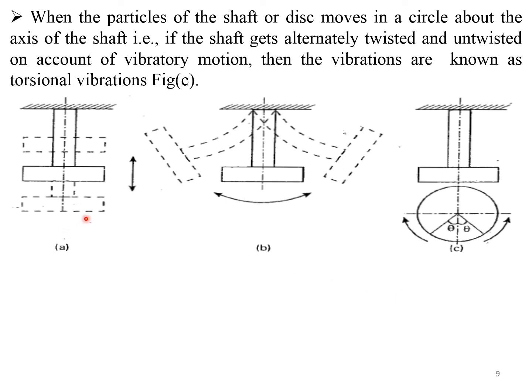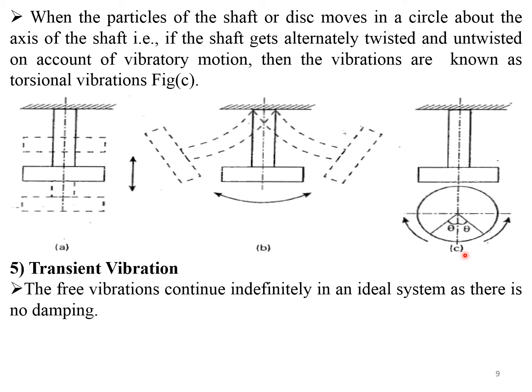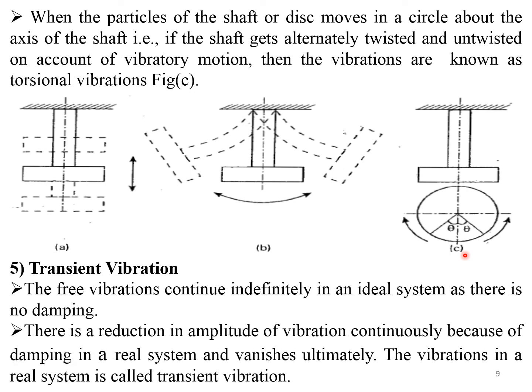All three conditions — longitudinal, transverse, and torsional — are shown clearly in the figure. Transient vibration: free vibrations continue indefinitely in an ideal system with no damping. In a real system, damping causes a continuous reduction in amplitude of vibration until it ultimately vanishes. This type of vibration in a real system is called transient vibration. These are the basic concepts of vibrations.